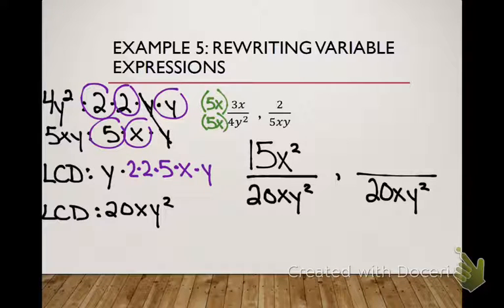Very good. X times X is X squared. I want you to try to figure out what your numerator is going to be in the second fraction. All right, so 5 to 20, what do I multiply by? 4. And then I already have my X, so then I just multiply by Y to get to my Y squared, so 8Y is in my numerator.